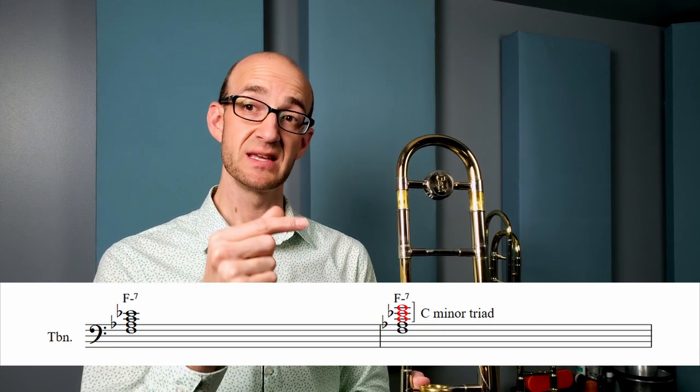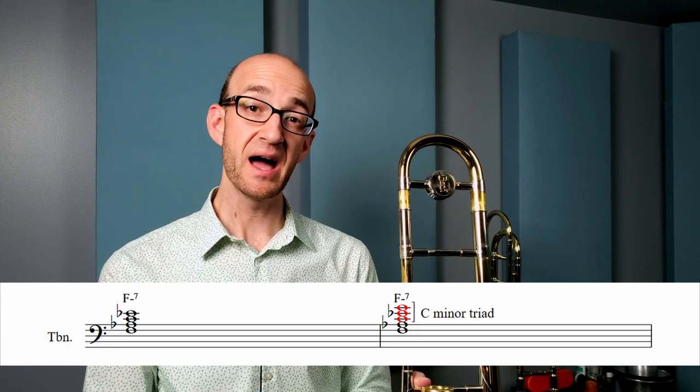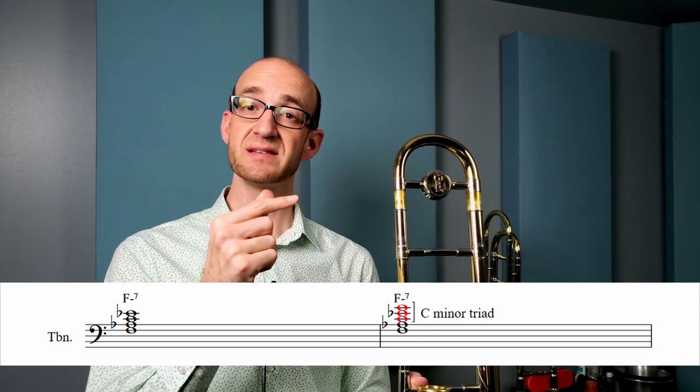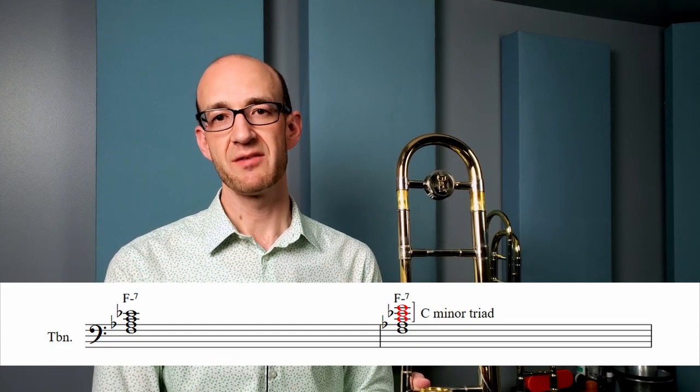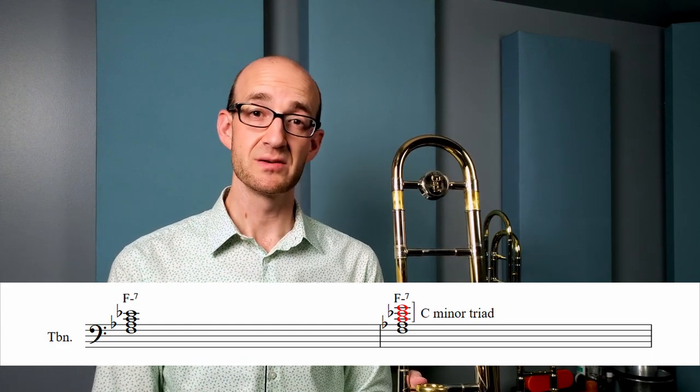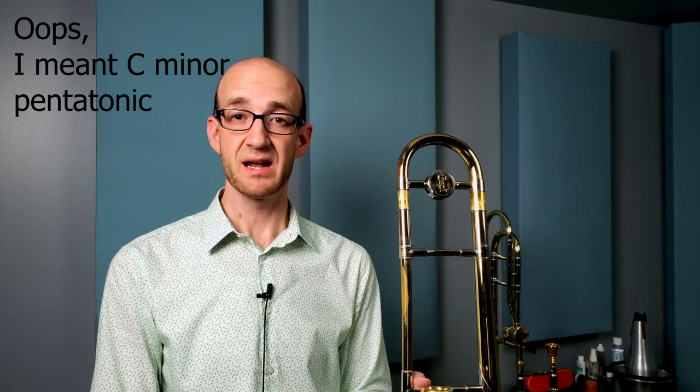And then if I think about the nine of that chord, I also have a G on top. So I have that C minor triad kind of embedded in that F minor chord. That tells me I want to use an F minor pentatonic. So that sounds like this.